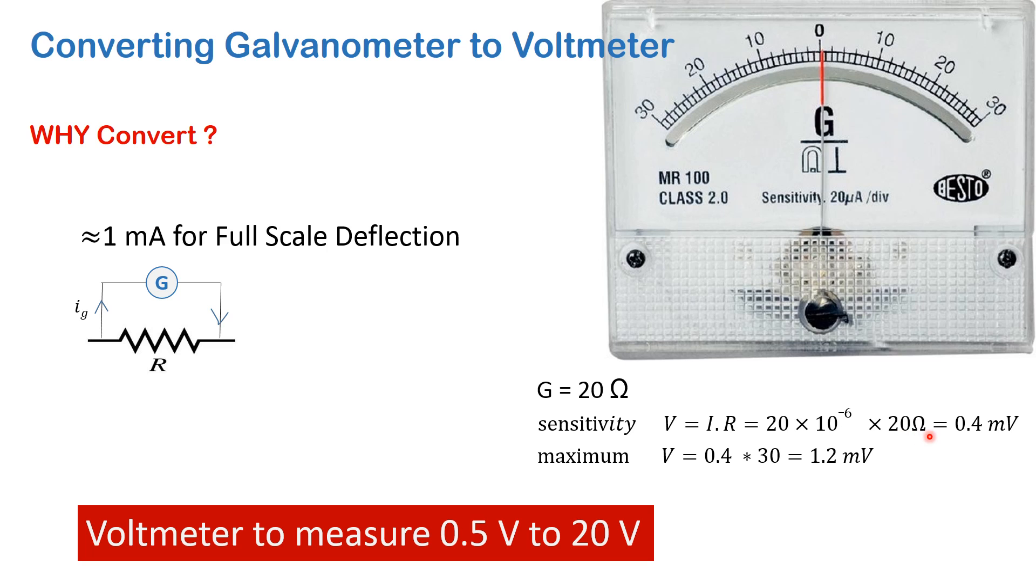So what this means is that each of these divisions measures 0.4 millivolt, and the maximum voltage that this galvanometer can measure on full scale deflection is 1.2 millivolt.